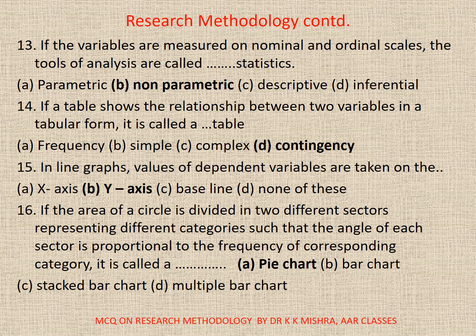Question 14: If a table shows the relationship between two variables in tabular form, it is called a dash table. A. Frequency. B. Simple. C. Complex. D. Contingency. Correct option is D. Contingency.